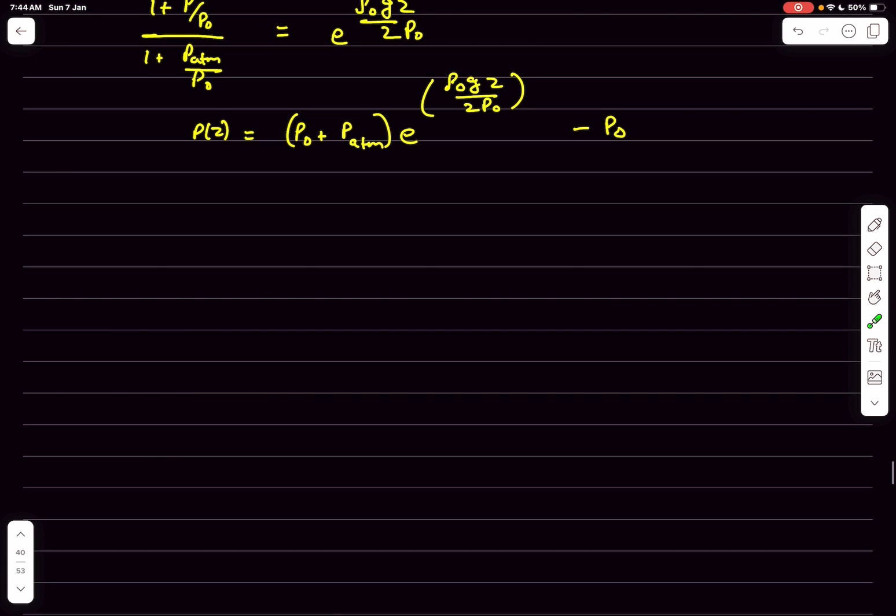In the second problem they wanted us to find the mass. So now the mass of the fluid, again as a function of z, is going to be integral of ρ dV, right? So this we can write it as A times integral ρ dh.